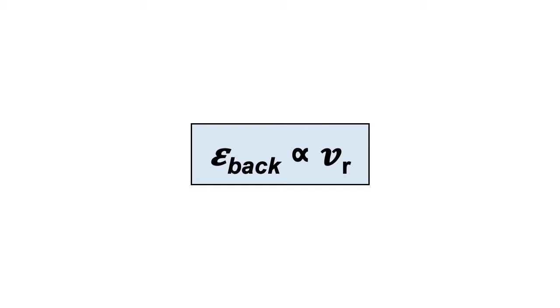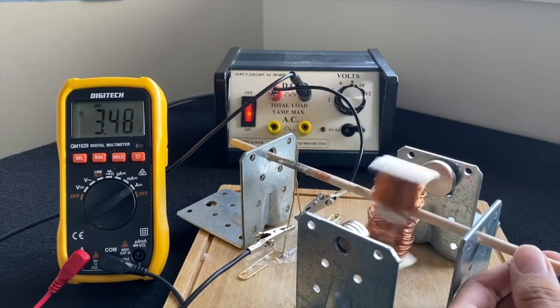Back EMF depends on the speed of the motor. As the rotational speed of the motor increases, the rate of change of flux also increases, producing a larger back EMF, which decreases the current running through the coil.